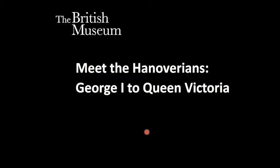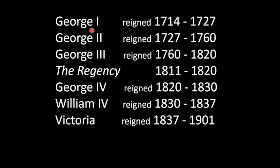The Hanoverians ruled Britain from 1714 to 1901, the end of Queen Victoria's reign. During that time there were a number of Georges, Williams, and Victoria — all members of the same family. Across the dynasty we have one generation starting with George the First, then George the Second, then we skip a generation, followed by a fourth, and then a fifth generation with two brothers ruling before we arrive at Victoria as the sixth generation.